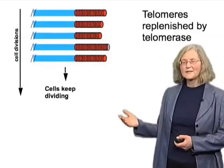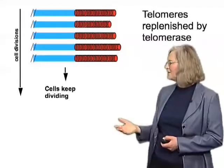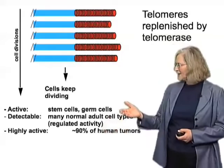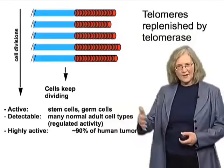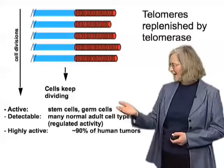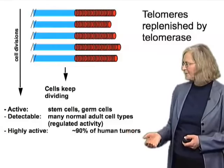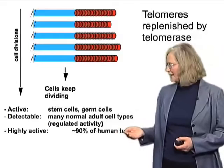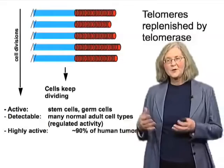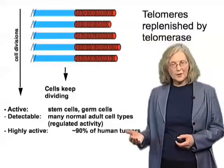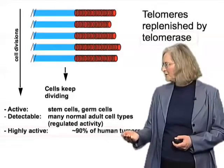To recapitulate: telomerase keeps telomeres elongating and replenished so cells can keep dividing — in stem cells, germ cells, and various proliferative cell types. It's detectable in many normal cell types and highly active in the great majority of human cancers. In some cancers without high telomerase, one actually often finds the ALT mechanism, but that's only a particular subset — the great majority of common human tumors have highly active telomerase.